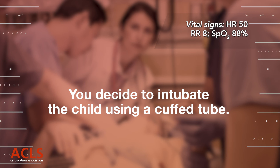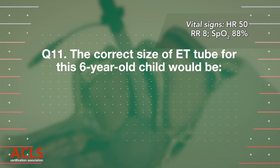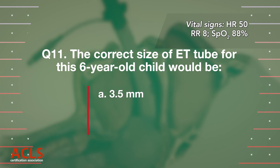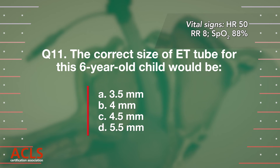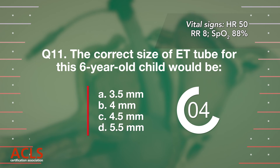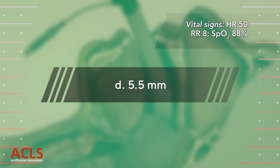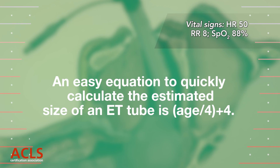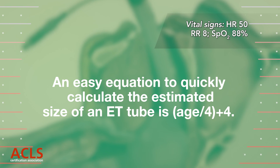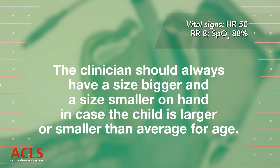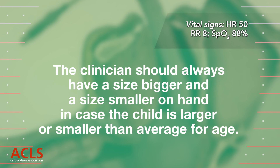You decide to intubate the child using a cuffed tube. Question 11: The correct size of ETT for this 6-year-old child would be: A) 3.5 mm; B) 4 mm; C) 4.5 mm; D) 5.5 mm. Correct answer D — 5.5 mm. An easy equation to quickly calculate the estimated ETT size is: Age divided by 4, plus 4. The clinician should always have a size bigger and a size smaller on hand in case the child is larger or smaller than average for age.